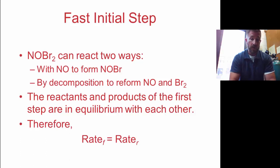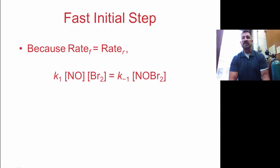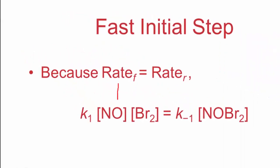The little sub F here represents forward. The little sub R we see here represents reverse. So those two rates are equal. And since we know they're equal, we can actually set the rate laws for each side of those equal. We can say, because these are equal, the rate of the forward reaction is equal to K₁ times [NO] times the concentration of bromine. Then we're going to say the reverse reaction: the rate of the reverse is equal to K₋₁ - we're putting negative one because that's reversed - times the concentration of NOBr₂.